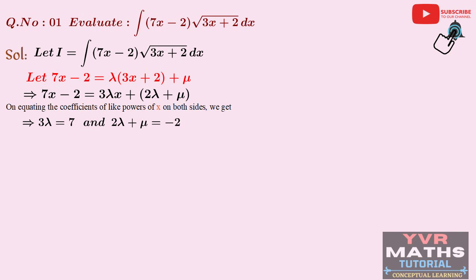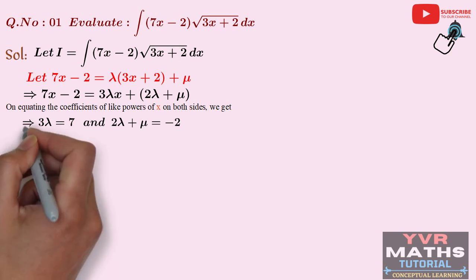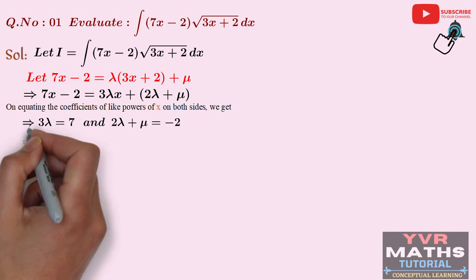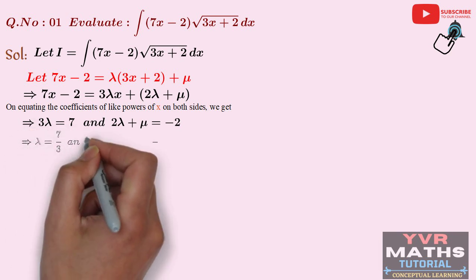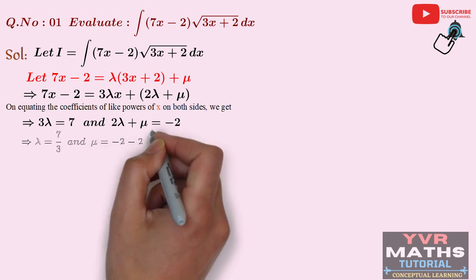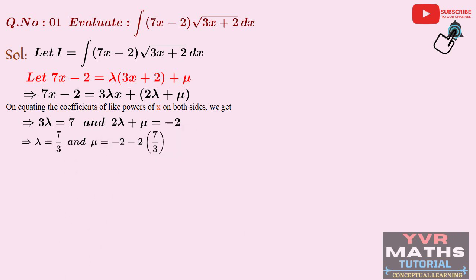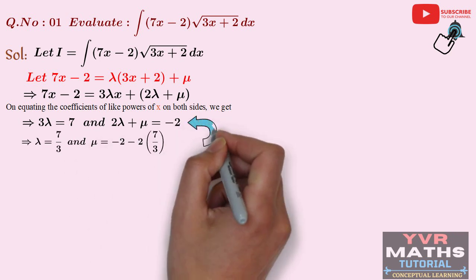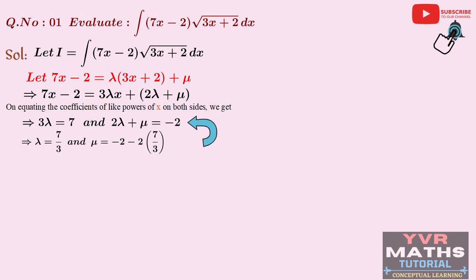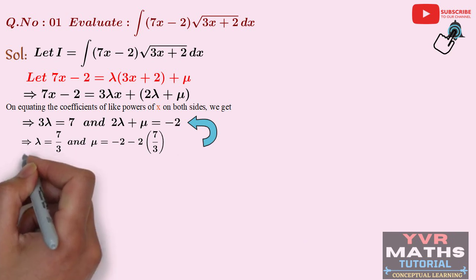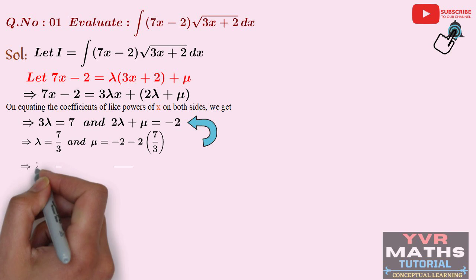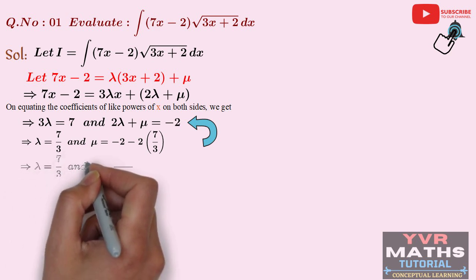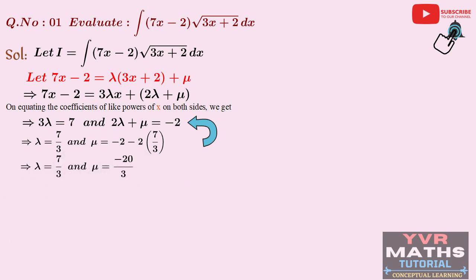From 3λ = 7, we get λ = 7/3. Substituting this λ value into 2λ + μ = −2: μ = −2 − 2(7/3) = −2 − 14/3 = −20/3. So λ = 7/3 and μ = −20/3. We have completed Steps 1 and 2. Now we proceed to Step 3.